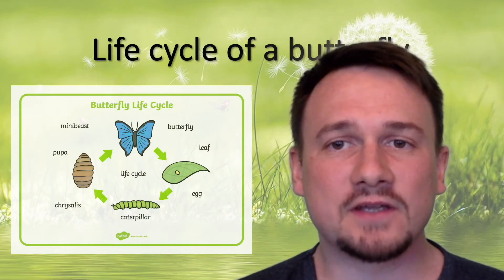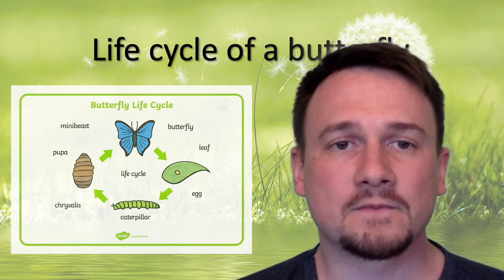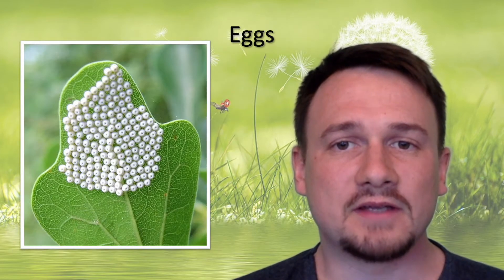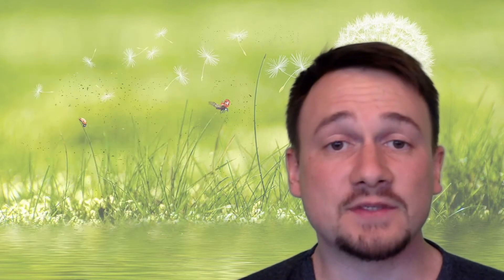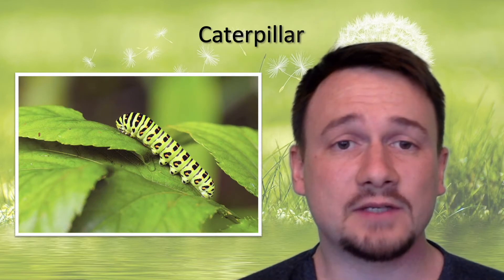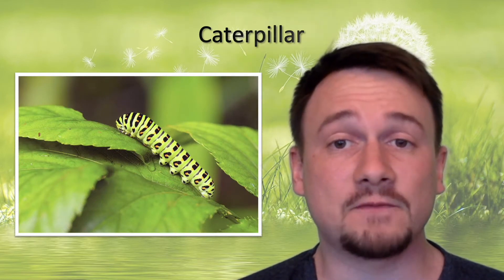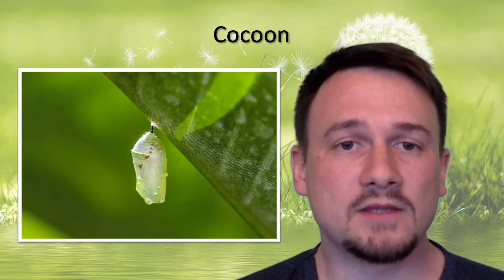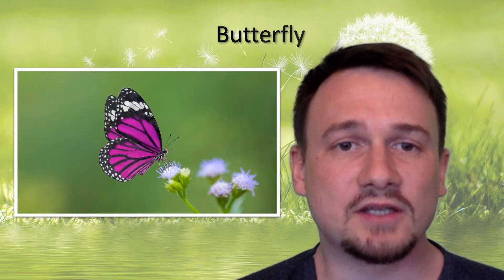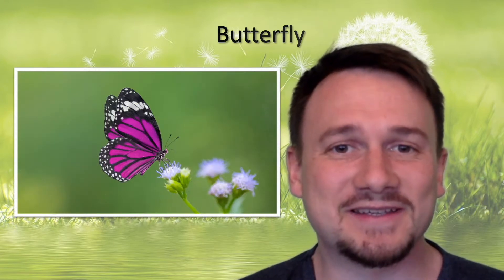Let us now quickly look again at the life cycle of a butterfly. Here you see the life cycle of a butterfly. First, an egg lays on a leaf. The egg pops and out of the egg comes a caterpillar. The caterpillar eats the leaf and becomes big and fat. Then the caterpillar builds a cocoon around itself and stays inside for some time. It nibbles a hole in the cocoon, comes out and ta-da — it's a butterfly! This is the life cycle of a butterfly.